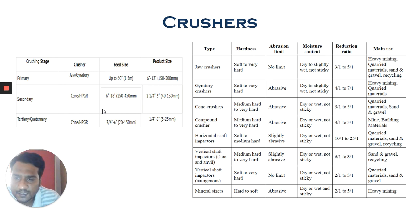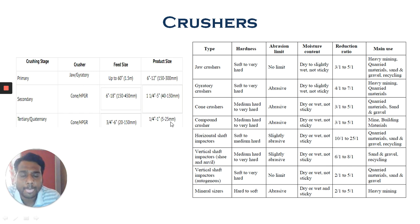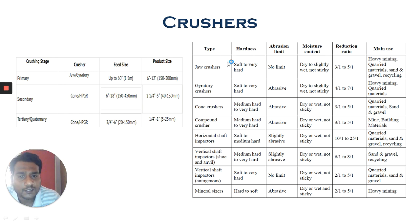For tertiary crushing, cone crushers and HPGR also serve this stage, with feed sizes from 120 to 150 mm and product sizes from 5 to 25 mm. In this table we can see the crusher type, hardness, abrasion limit, moisture content, reduction ratio, and main applications. These are things you may have learned in earlier classrooms, but this will brush up what types are available and their applicability to different ore types.